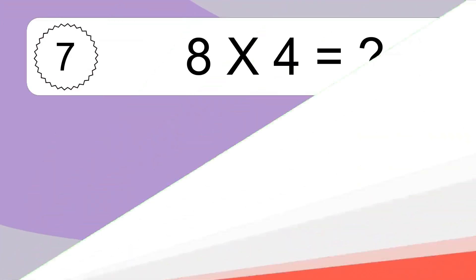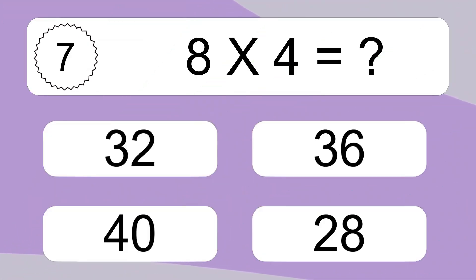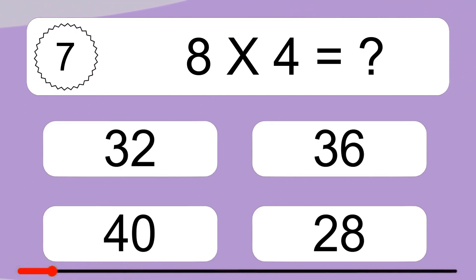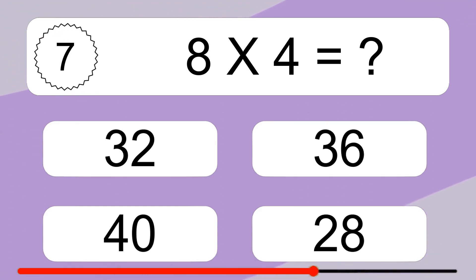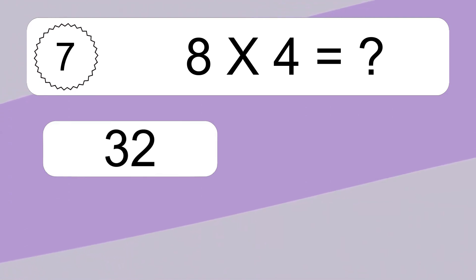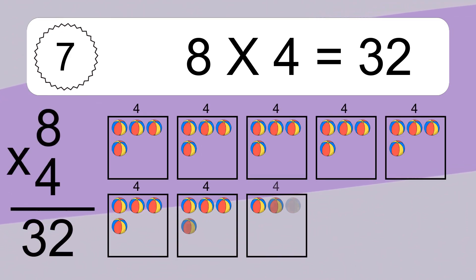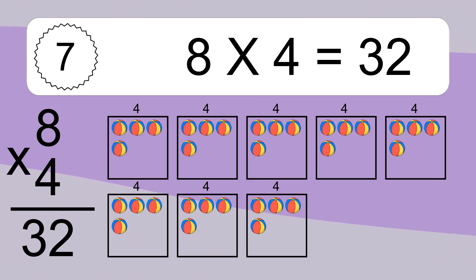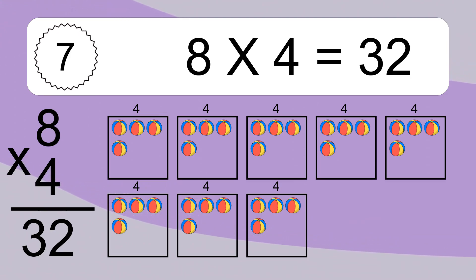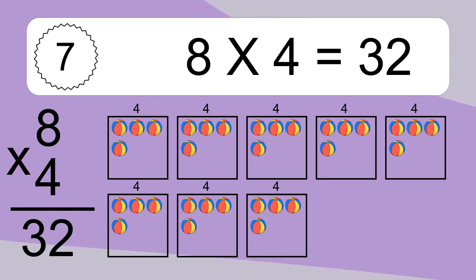8 times 4 equals what? 8 times 4 equals 32. We have 8 boxes and each box has 4 colorful balls inside. If you count all the balls in all the boxes together, you will have 8 times 4 balls. This equals 32 balls.